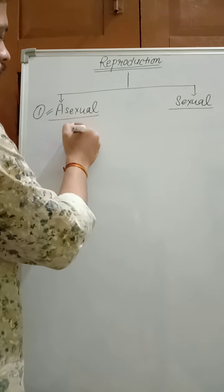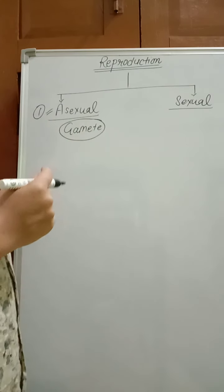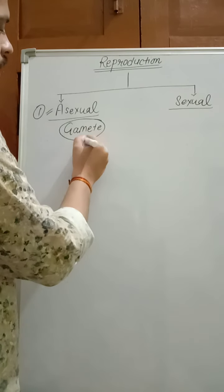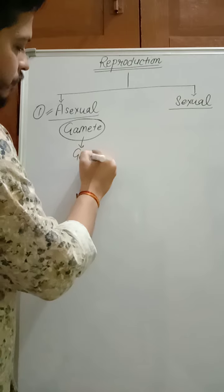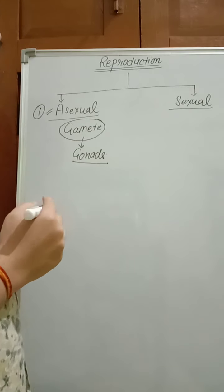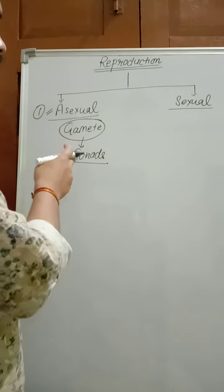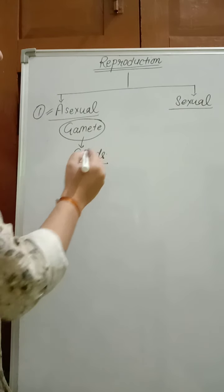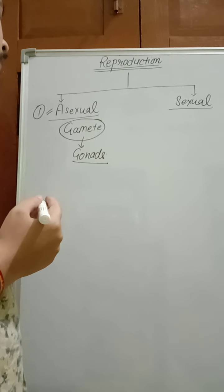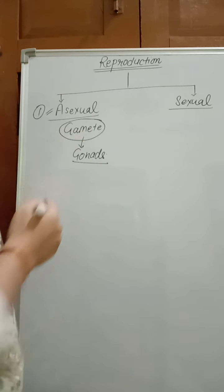Gametes are reproductive cells or sex cells which are produced inside the gonads. Gonads are the primary reproductive organs. In the case of male, the gonad is called testis, and in the case of female, that is the ovary. Inside the gonads, gametes are produced.